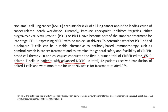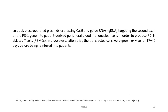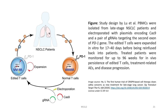In total, 12 patients received transfusion of edited T cells and were monitored for up to 96 weeks for treatment-related adverse events. The researchers electroporated plasmids expressing Cas9 and guide RNAs targeting the second exon of the PD-1 gene into patient-derived peripheral blood mononuclear cells. In order to produce PD-1-ablated T cells in a dose escalation trial, transfected cells were grown ex vivo for 17 to 40 days before being re-infused into the patients.